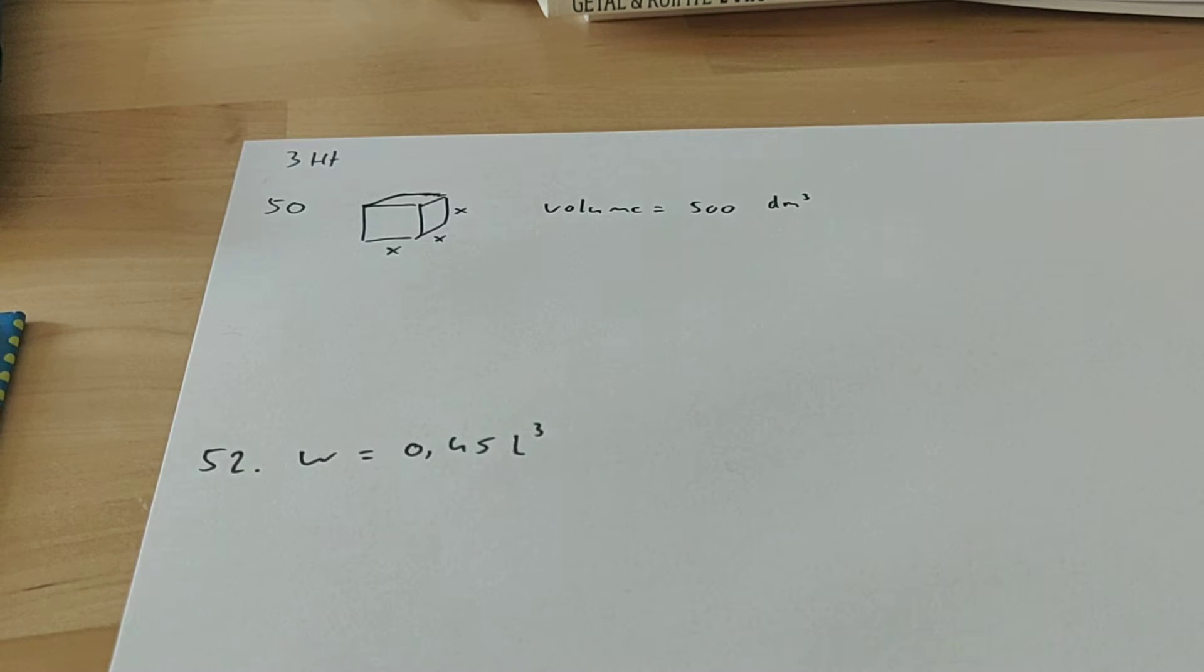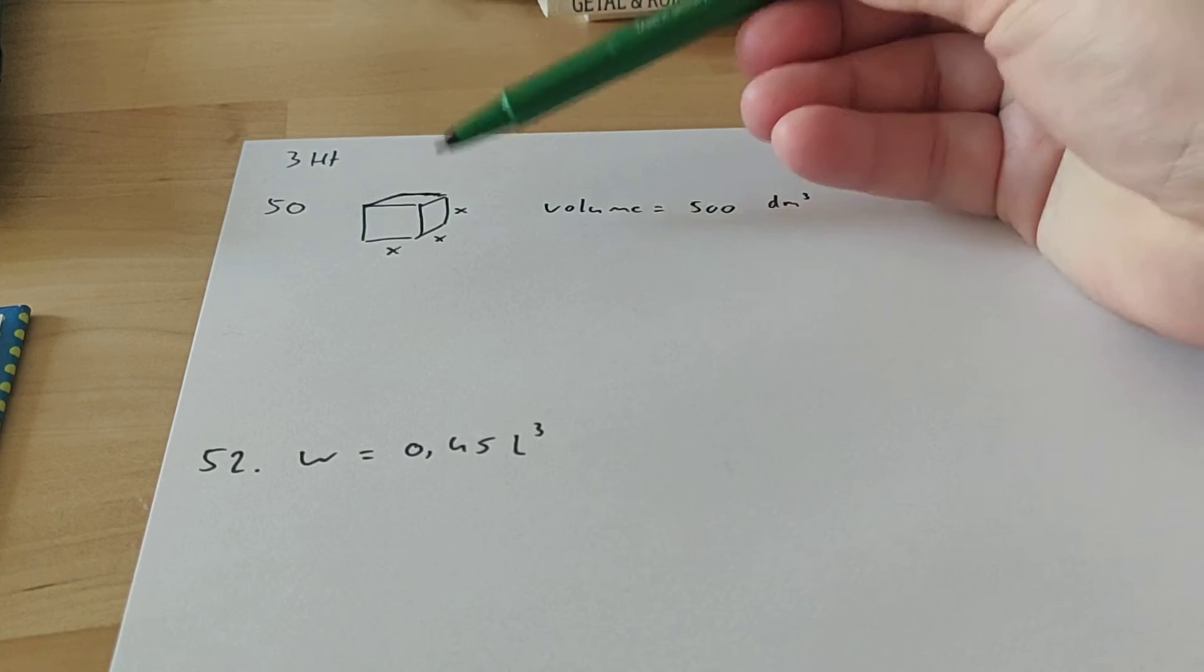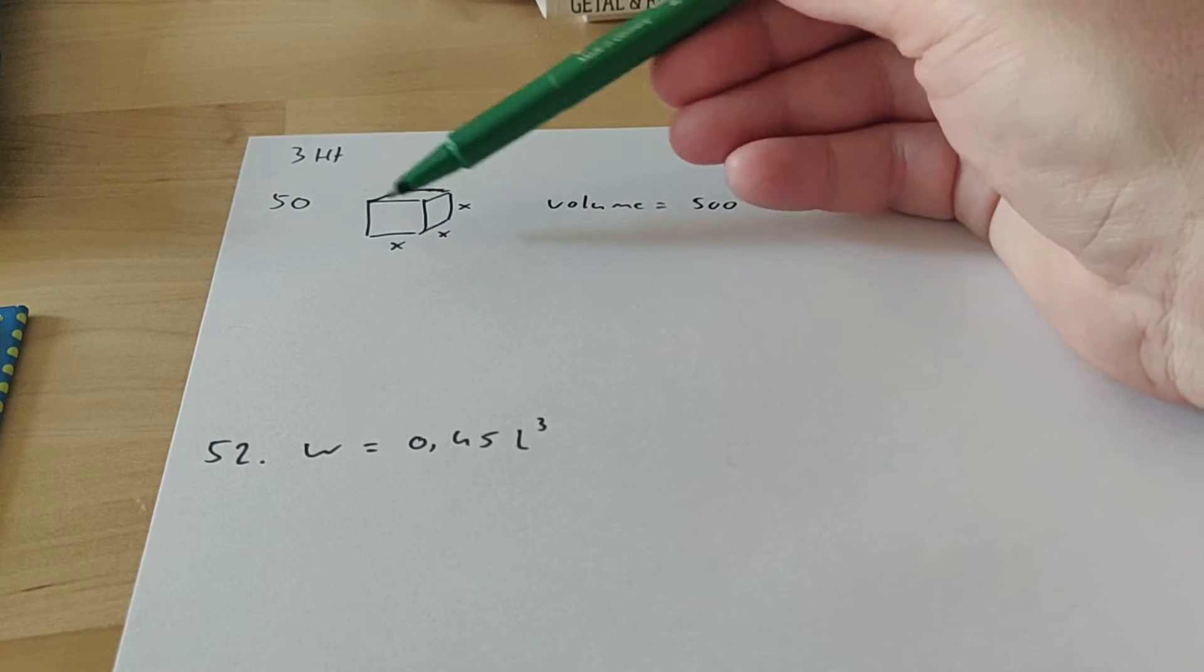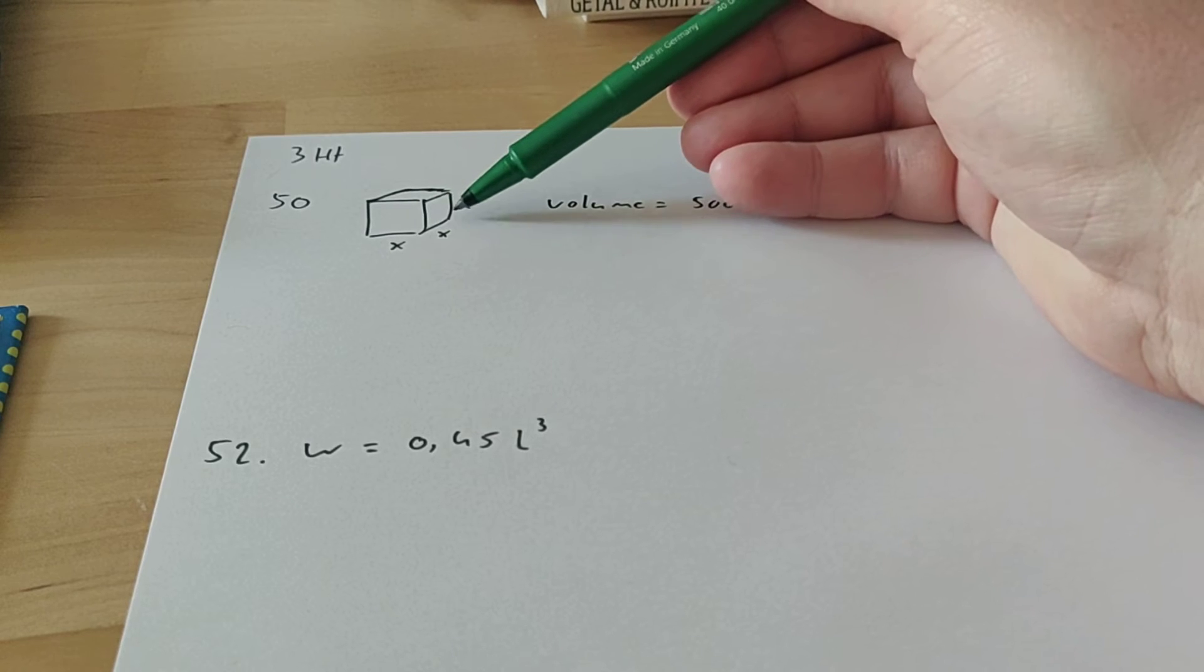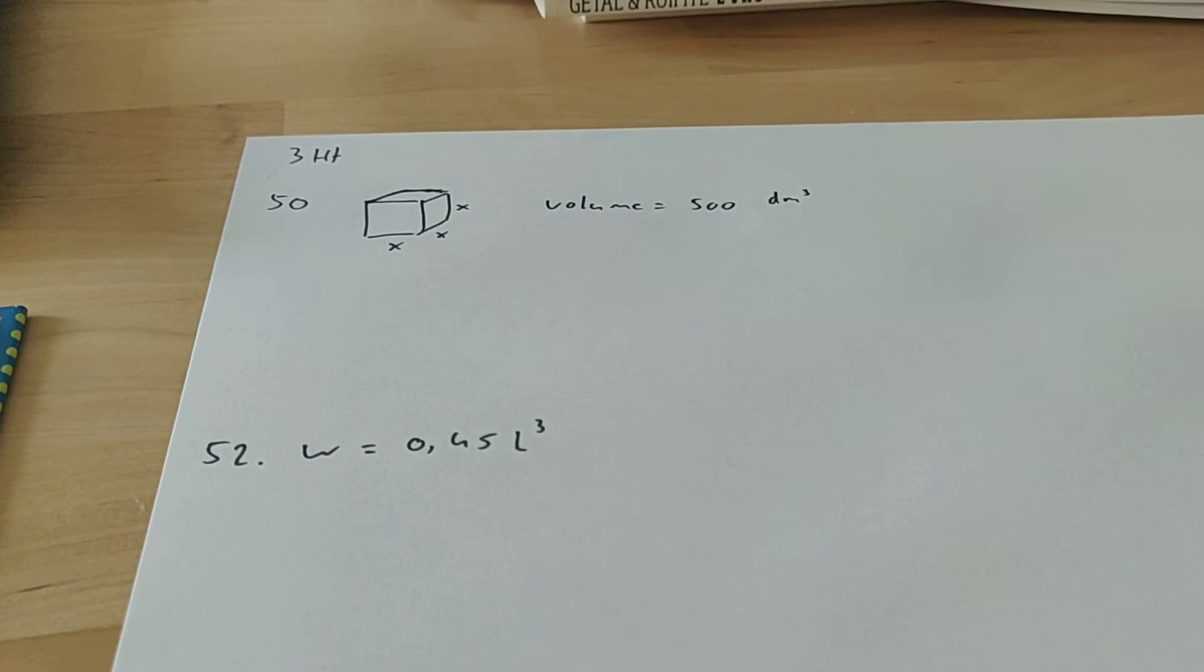It says a cubic box has a volume of 500 liters. So here you see a cubic box. I called all the measurements X. So the length is X, the width is X, and the height is X. They're all the same because it's a cube. In a cube all the lengths are the same.